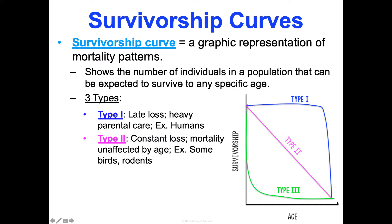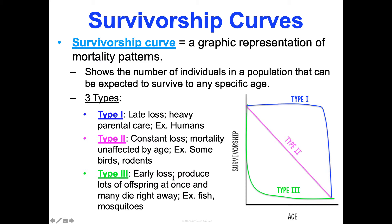Type II is constant loss: mortality is unaffected by age. Some birds and rodents follow this pattern — a medium number of offspring, medium investment in survival, and roughly equal proportions die at birth, middle age, and late age. It's more random. Type III is early loss: species produce a huge number of offspring at once, knowing most will die and hoping some survive. There's little parental care — it's essentially 'good luck.' Fish and mosquitoes are examples of this pattern.